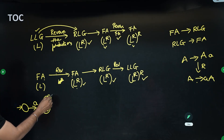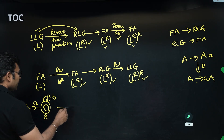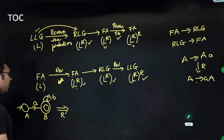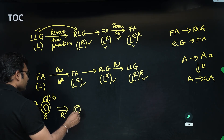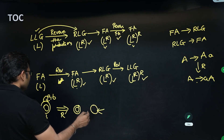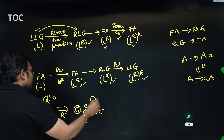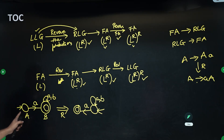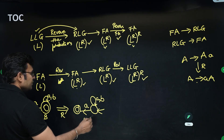Let's take an example. Say we have a finite automata over {a, b} — states A and B — and the language is the set of all strings starting with a. Now I will reverse the finite automata: make the initial state the final state, the final state the initial state, and reverse all edges. The reversed FA represents strings ending with a, which is L reversed.